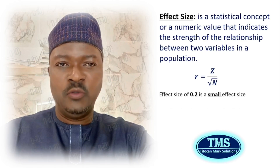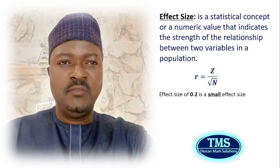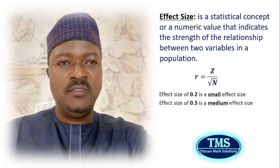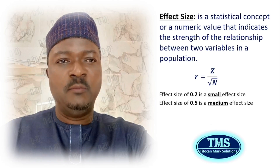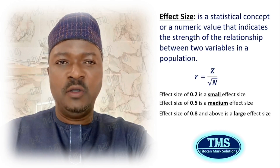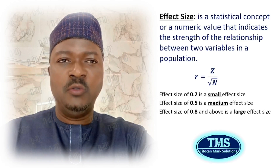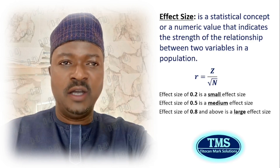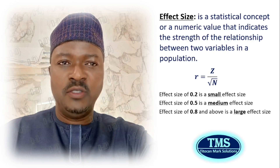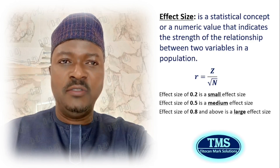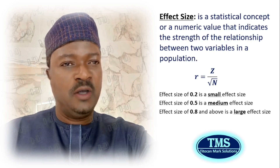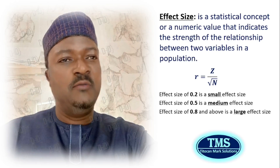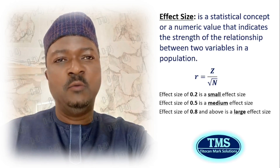Effect size can be small, medium, or large. An effect size of 0.2 is a small effect size, 0.5 is a medium effect size, and greater than or equal to 0.8 is a large effect size. However, you are advised to use these effect size criteria carefully. A small effect size indicates a limited significant relationship, while a large effect size indicates a significant relationship.